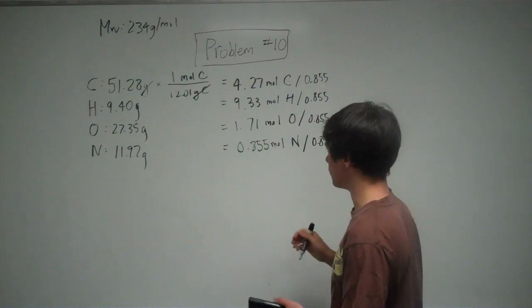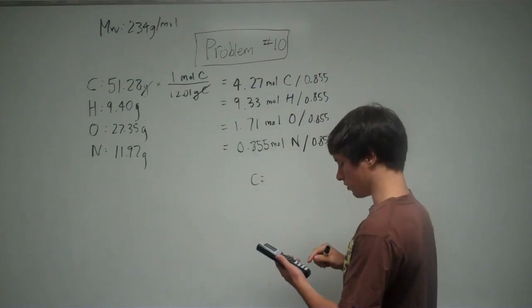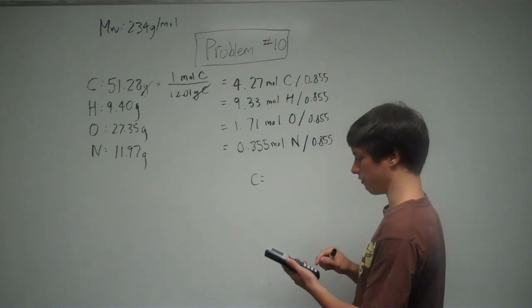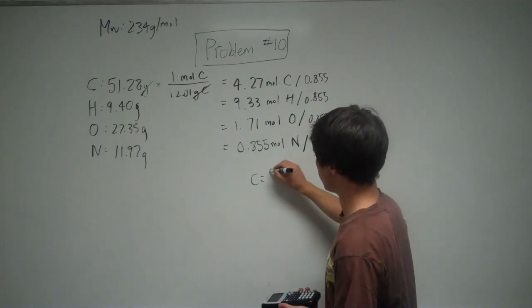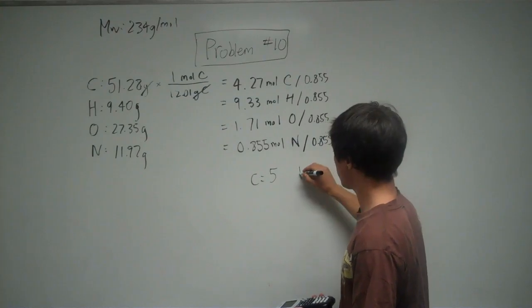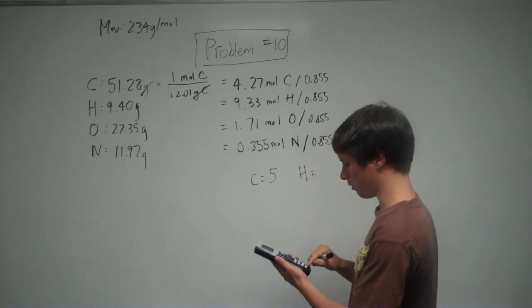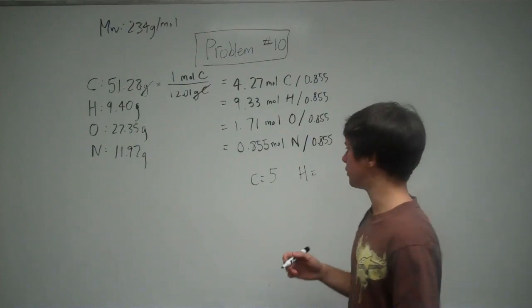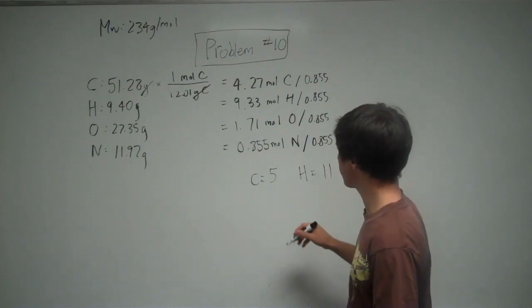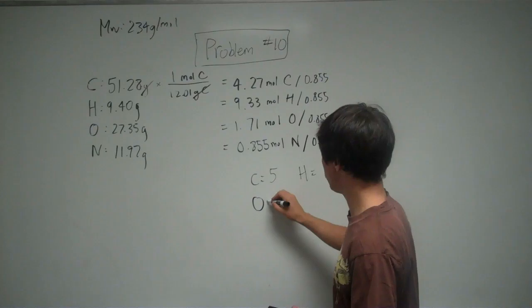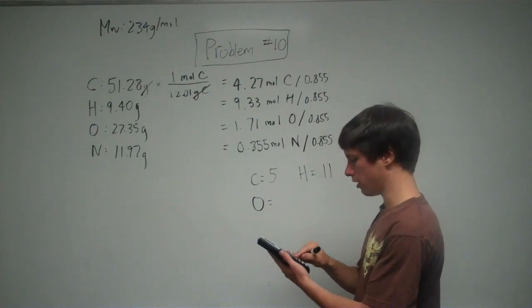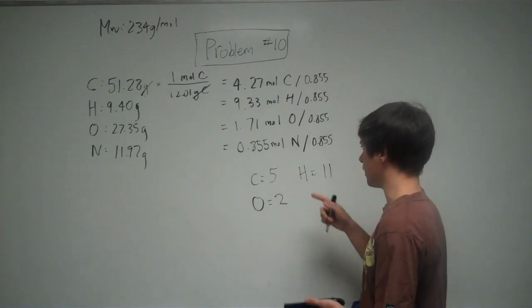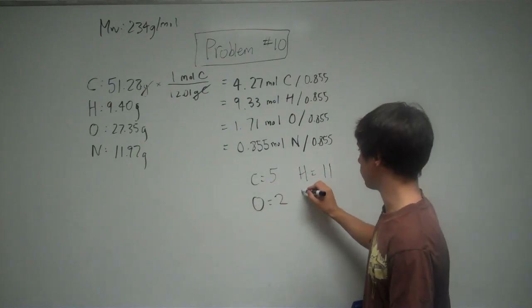So what you're going to see here is that you get C equals 4.27 divided by 0.855, that gives you 4.99, so you can just call that 5. H is 9.33 divided by 0.855, it's 10.91, close enough to 11 to round it. So O is going to be 1.71 divided by 0.855, that gives you 2 exactly. And 0.855 divided by 0.855 is just 1.